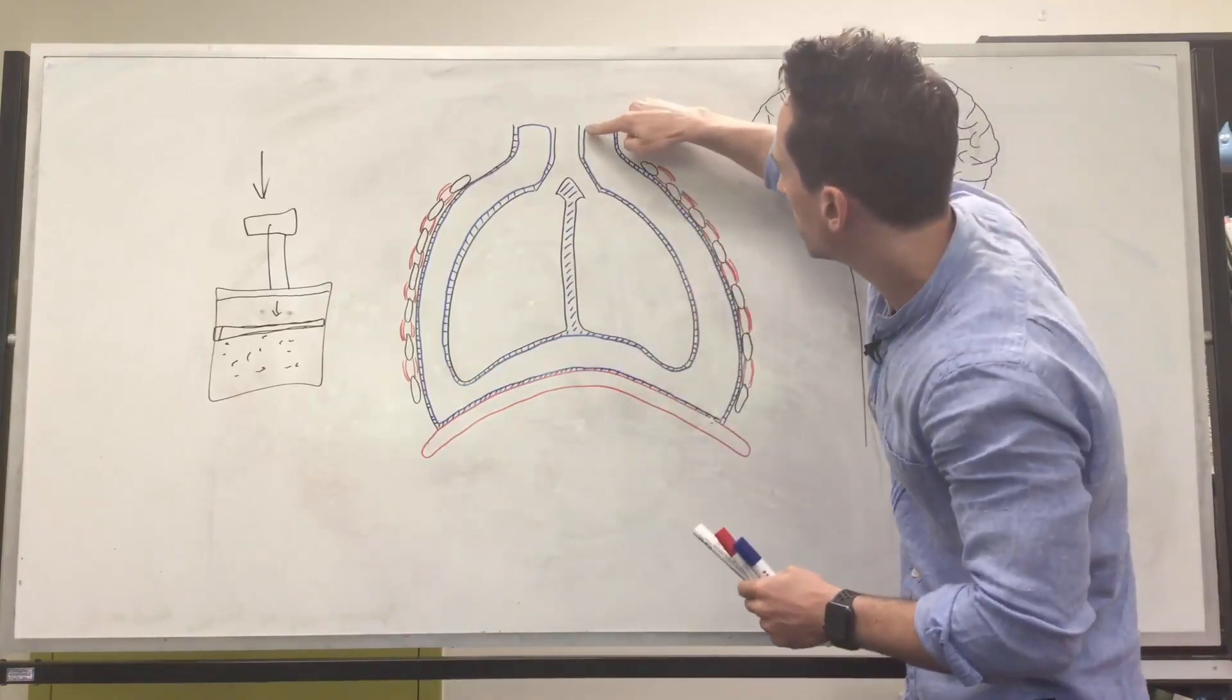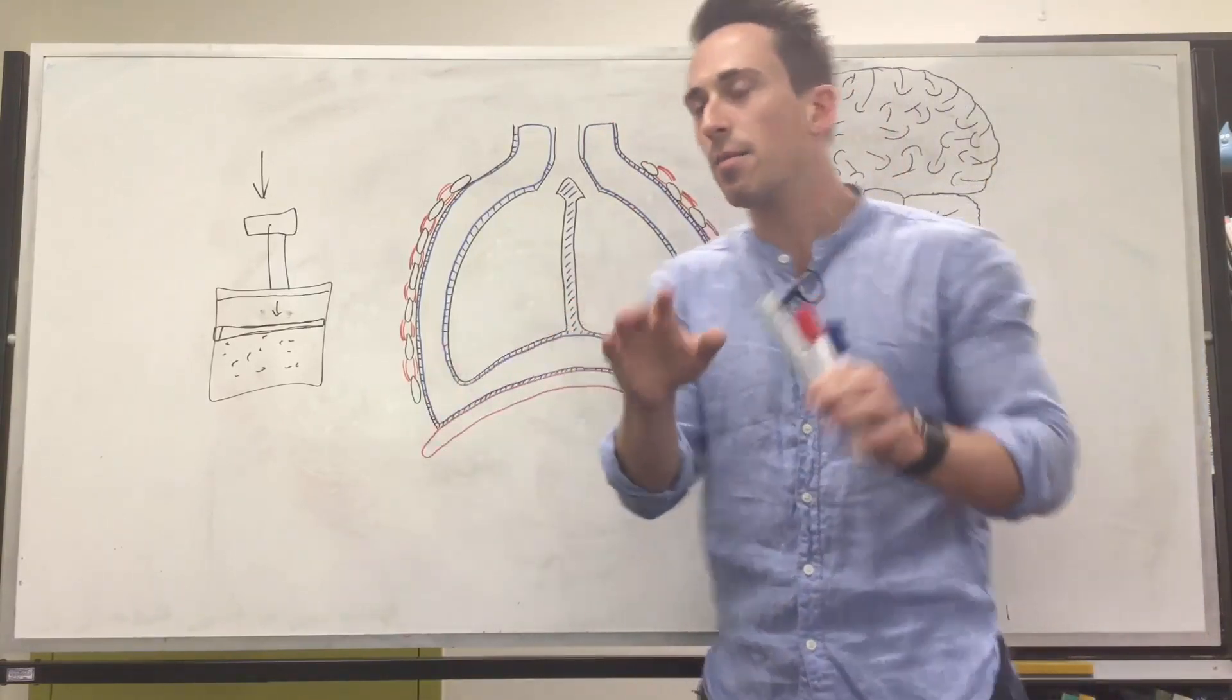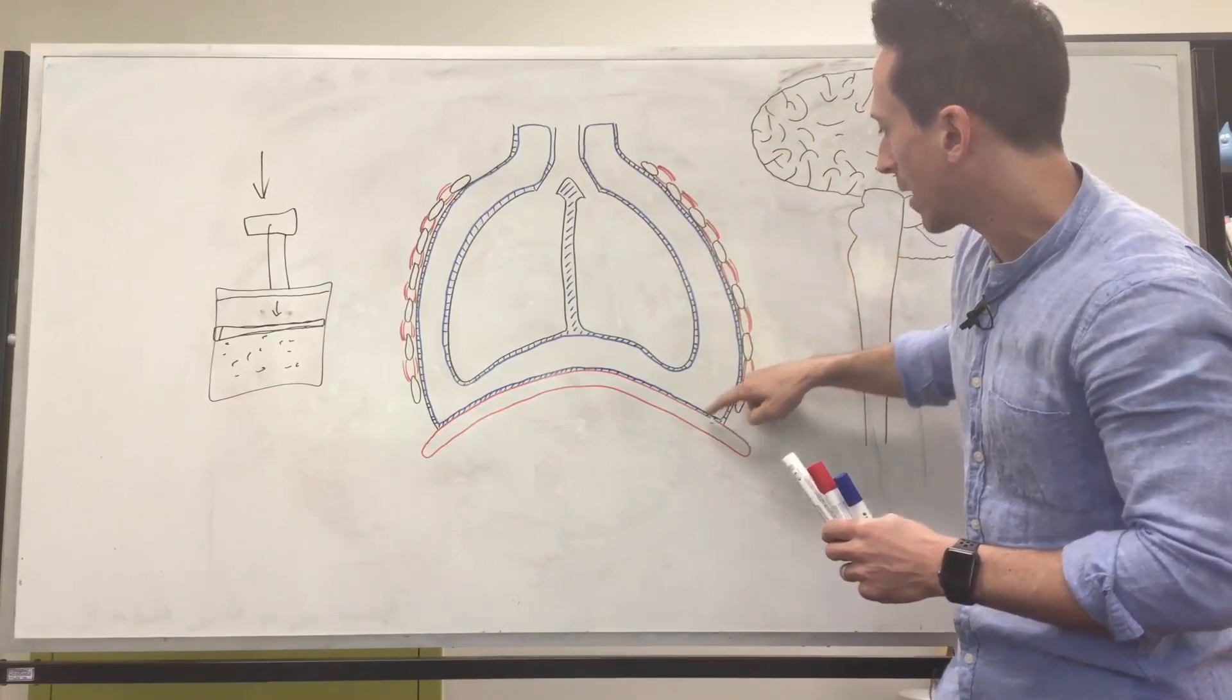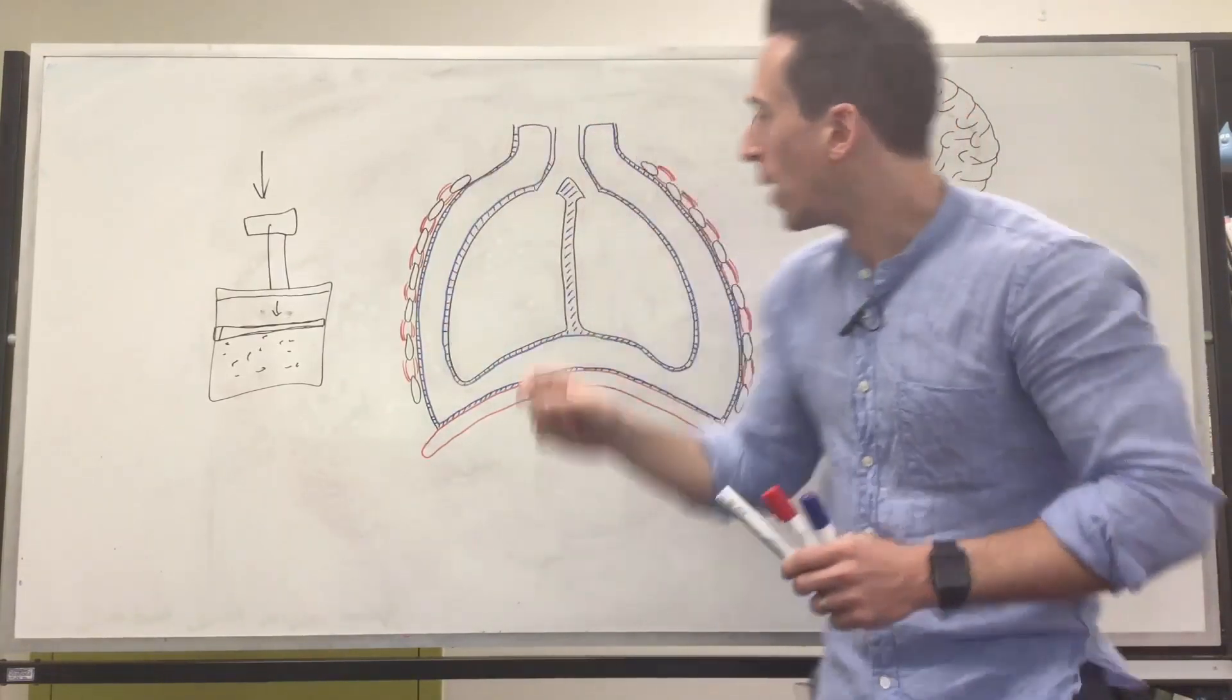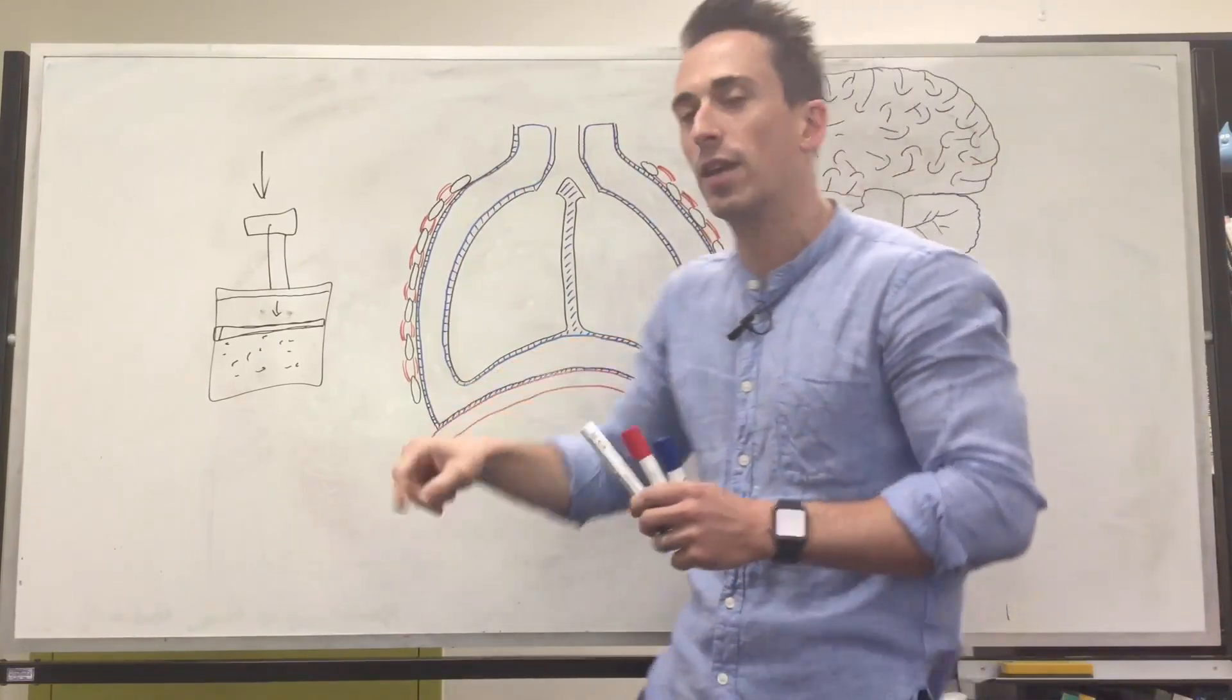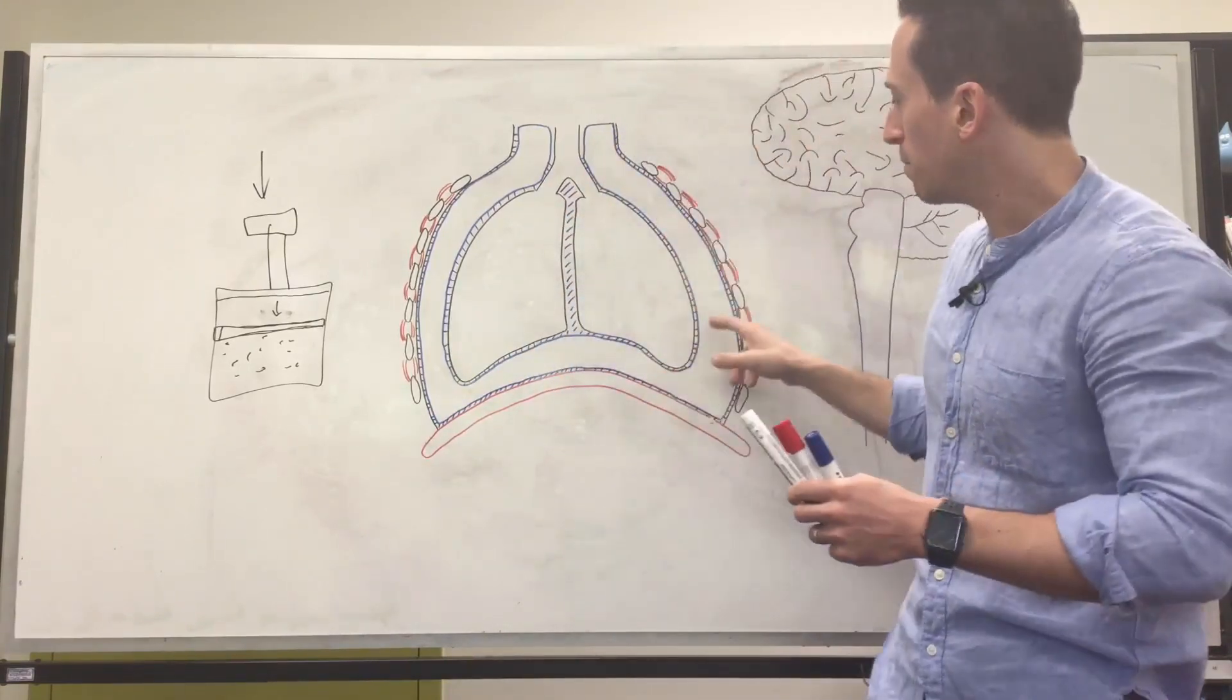One of these membranes is most adherent to the lungs. That's called the visceral pleura. And the other membrane is most adherent to the wall of the thorax, which we term the parietal pleura. And in between, we have a space. That's called the pleural space or the pleural cavity. And there's a fluid in there called a serous fluid around about 10 to 20 mils of this fluid.